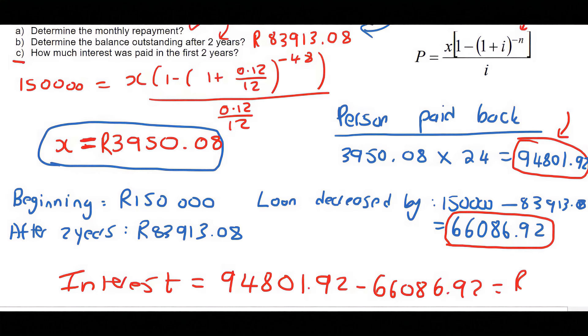So the amount of interest is going to be 94,801.92 minus 66,086.92. And that's going to give us a value. Oh, it rounds off perfectly. 28,715 Rand. That is how much interest this person has paid over a two-year period.